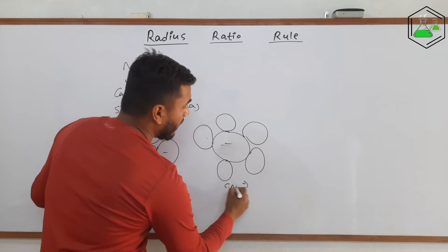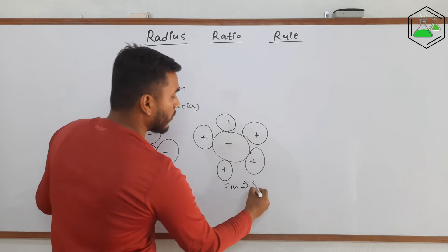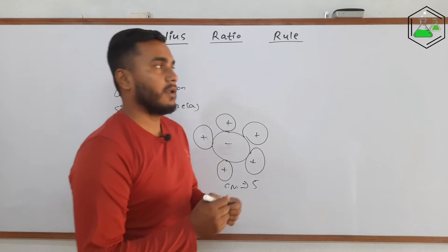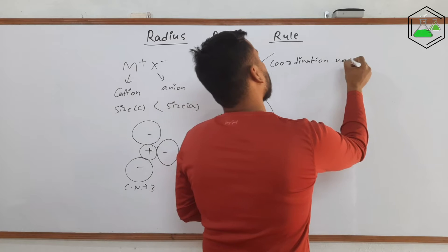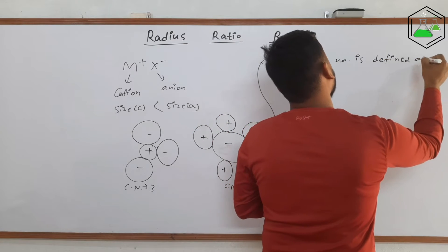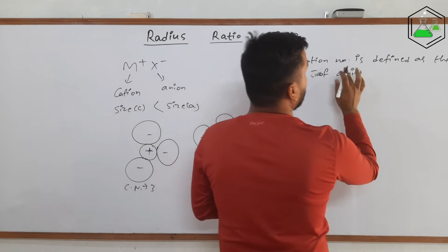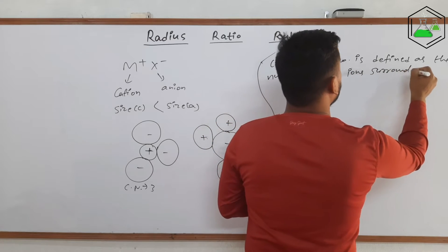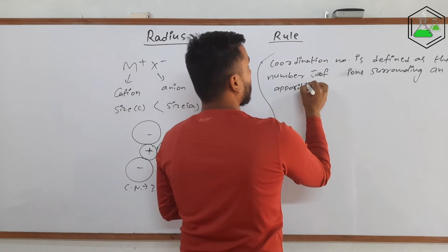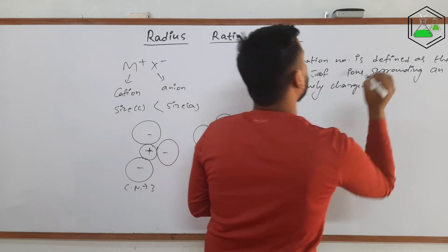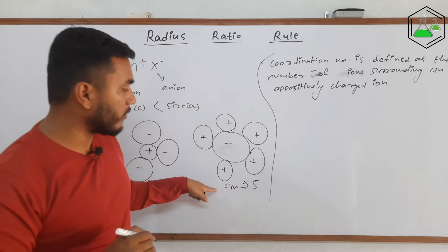Similarly, the coordination number of this anion over here — counting: 1, 2, 3, 4, 5 — there are 5 cations surrounding this anion. So the coordination number for this particular case is 5. The definition of coordination number: coordination number is defined as the number of ions surrounding a positively charged ion. In this case, the coordination number of the cation is 3 and the coordination number of the anion is 5.